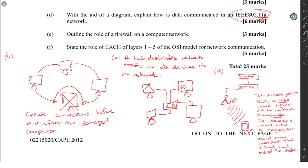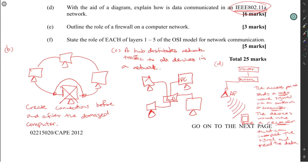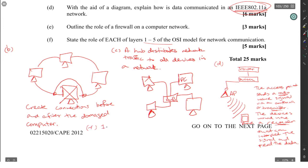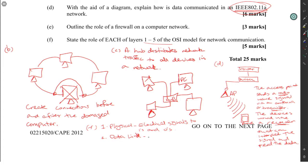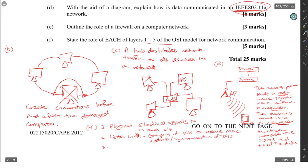Explain the role of each of layers one to five of the OSI model. Layer one is at the bottom and you work your way up. Layer 1 is the physical layer — electrical signals, ones and zeros. Layer 2 is the data link layer — grouping of bits to create a MAC address, or synchronization of bits. Layer 3 is the network layer — assigning an IP address to logically differentiate the device on the network.